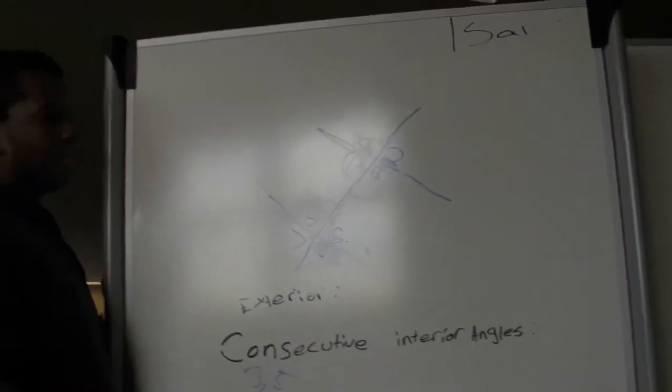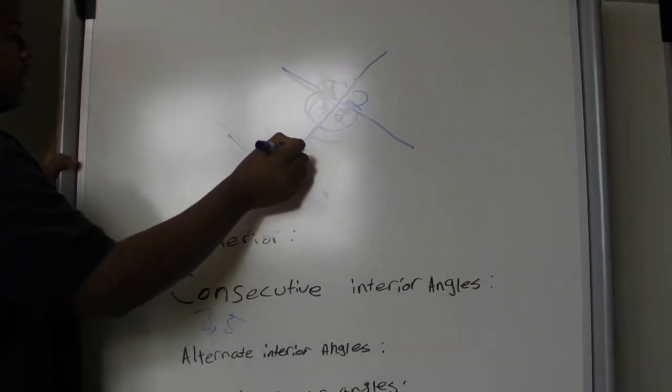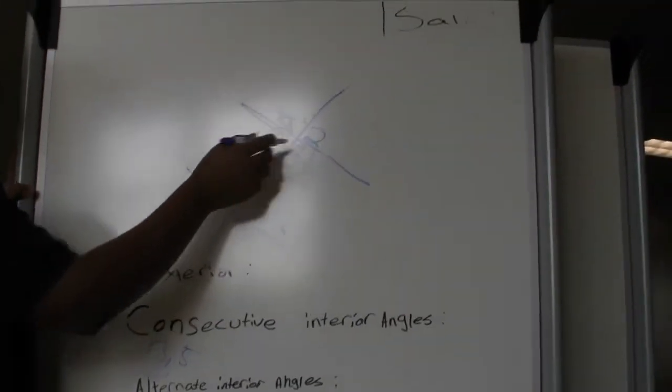Alternate interior angles are when they're on the inside, but one's on the outside and one's on the inside. For example, four and five.